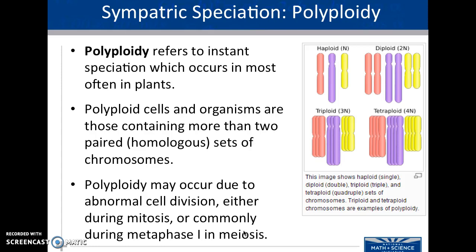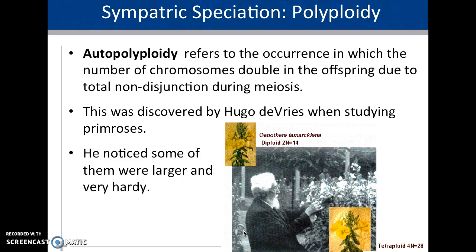Other reasons that we see sympatric speciation: the term polyploidy, which we've talked about quite a bit, refers to instant speciation which occurs most often in plants. Polyploid cells and organisms are those containing more than two pairs of chromosomes. This occurs due to abnormal cell division either during mitosis, but most often during meiosis, because crossing over happens and when those chromosomes are lined up they might pull a full chromosome over. Autopolyploidy refers to the occurrence in which the number of chromosomes doubles in the offspring due to non-disjunction during meiosis.